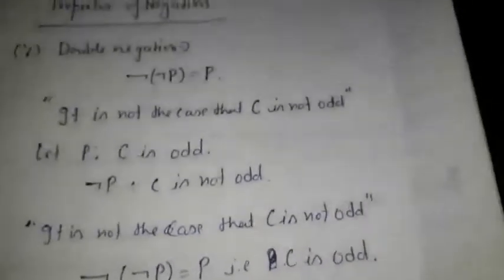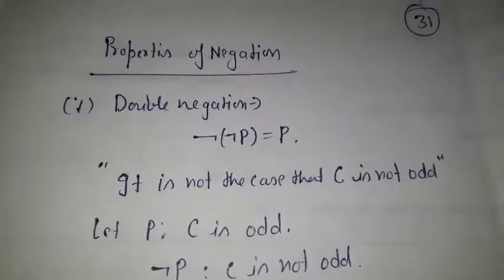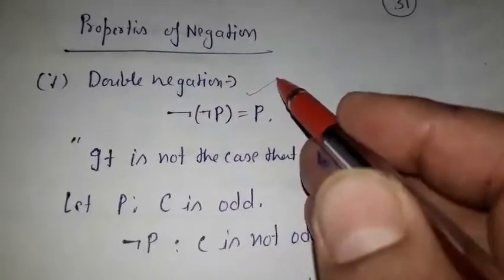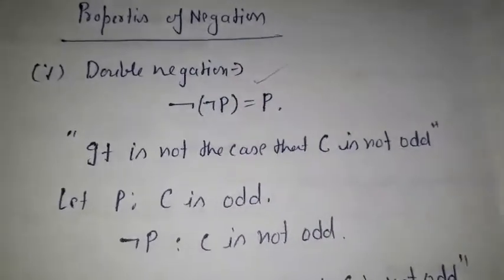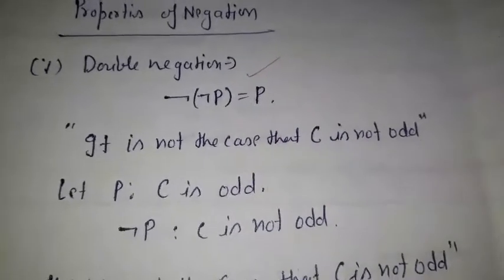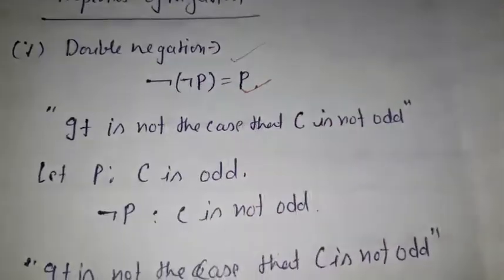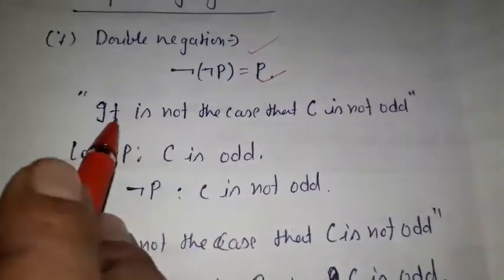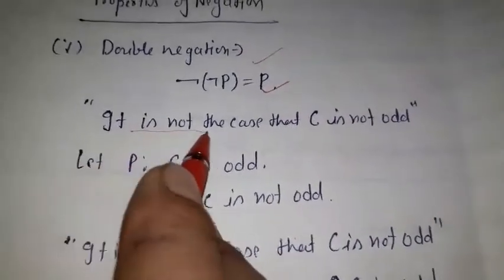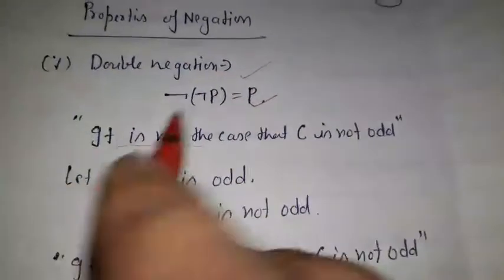There are some properties of negation. The first property is double negation. If we take the negation of a negative statement again, then it gives back the original proposition. 'It is not the case' is the negation. If we write 'it is not the case' before any statement, it represents the negative of that statement.